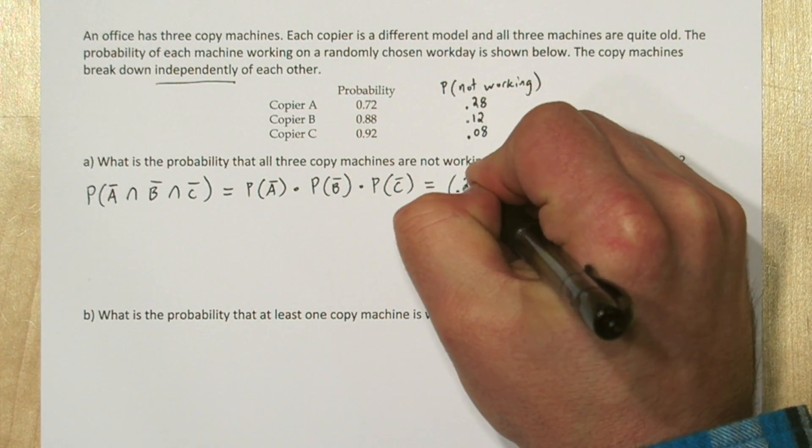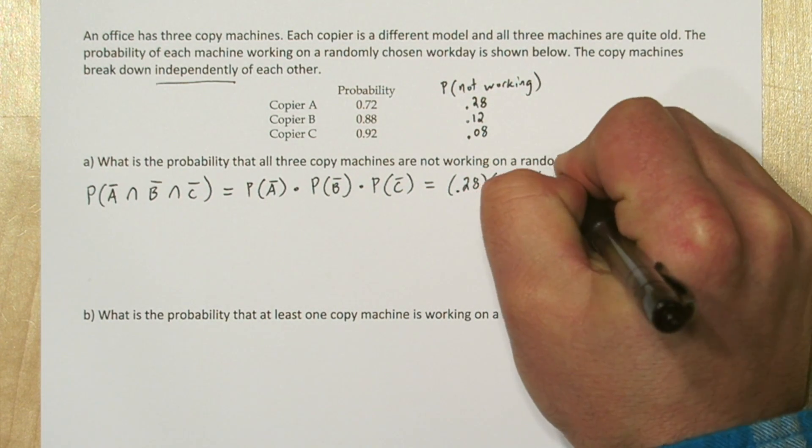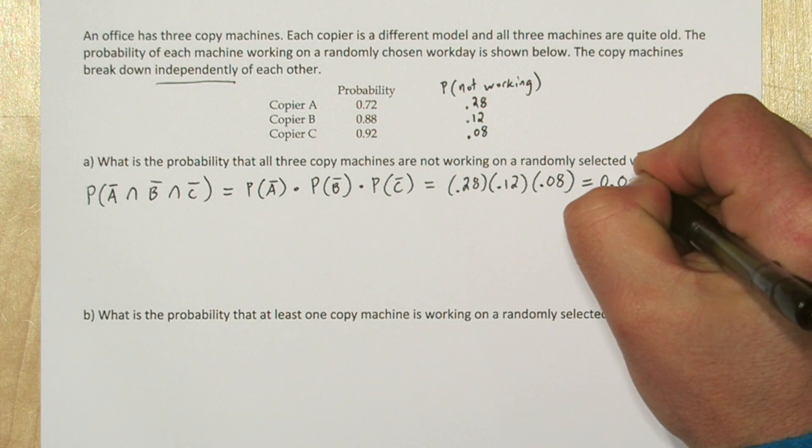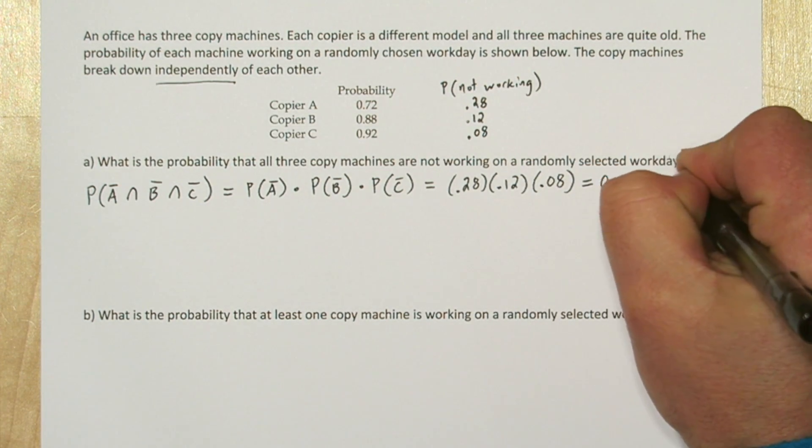Now we'll copy these probabilities down to our product. And when we multiply these, we find out the probability of all three machines not working is 0.002688.